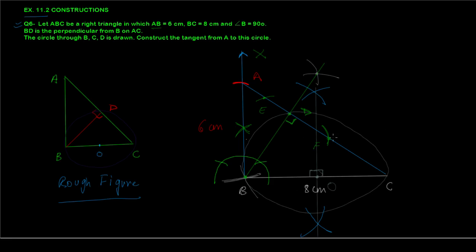Now we want to draw tangents from A to this circle. Notice that AB is already a tangent, because angle B = 90° means AB is perpendicular to radius OB at point B, which is on the circle. So AB is already one tangent. We just need one more tangent from A.